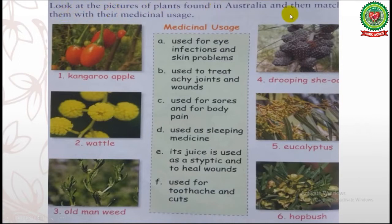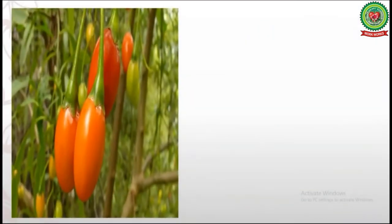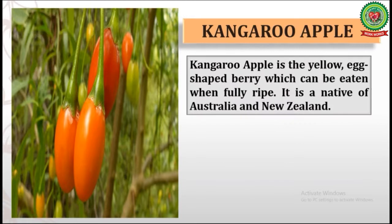Now students, come to our exercise part. Put your pencil here. Look at the pictures of plants found in Australia and match them with their medicinal usage. The pictures of the plants and their medicinal usages are given in separate boxes. We have to match the plants with their respective medicinal usage. We will discuss them one by one.